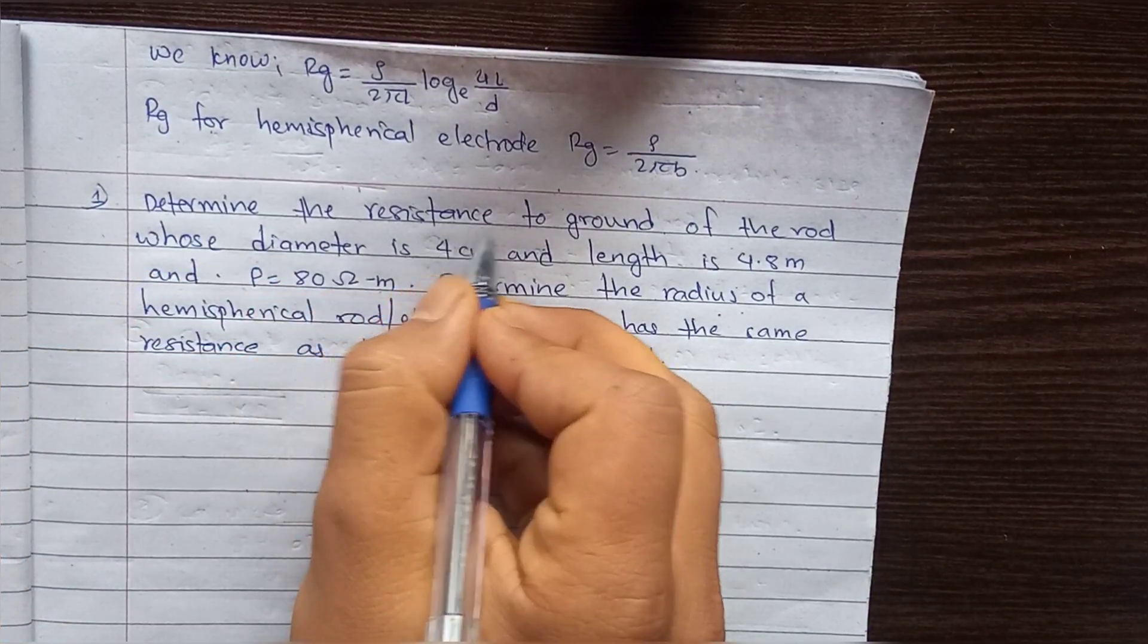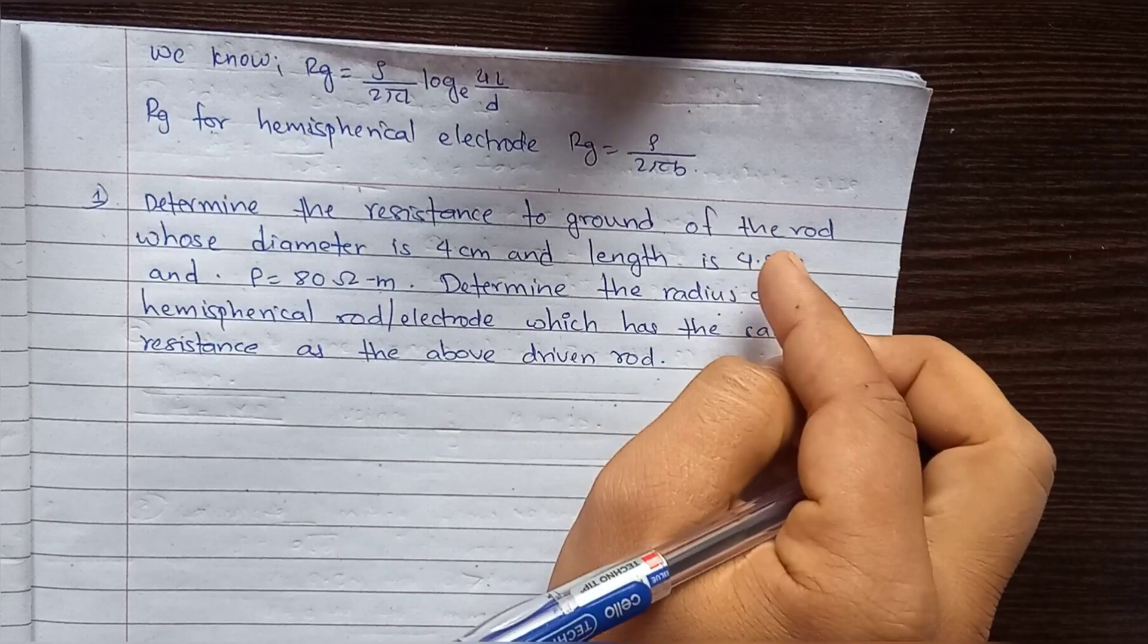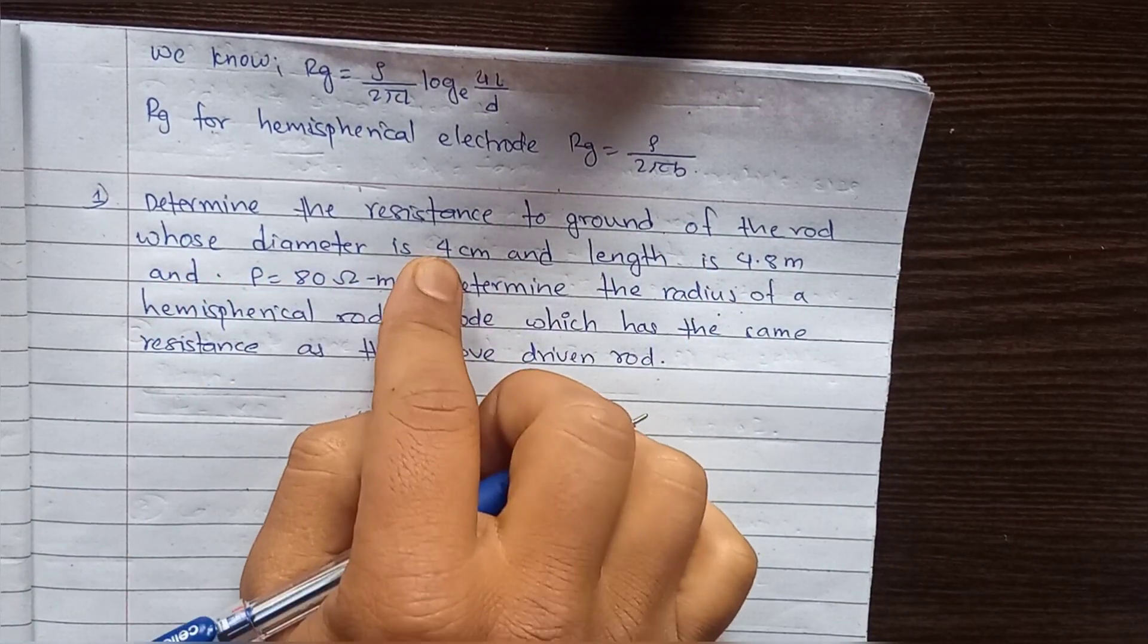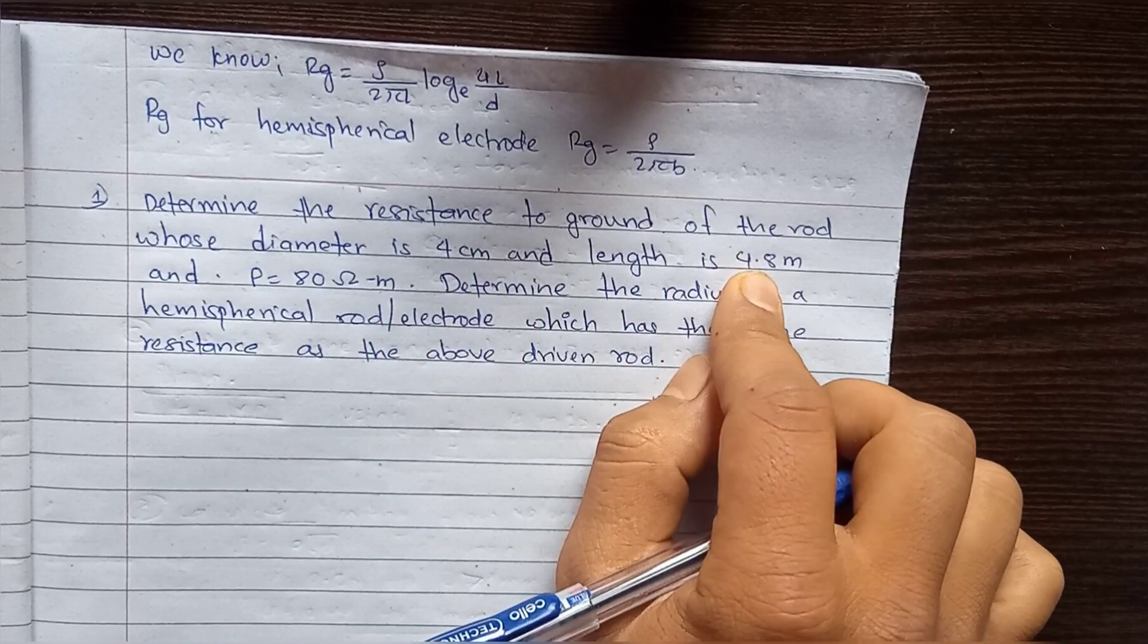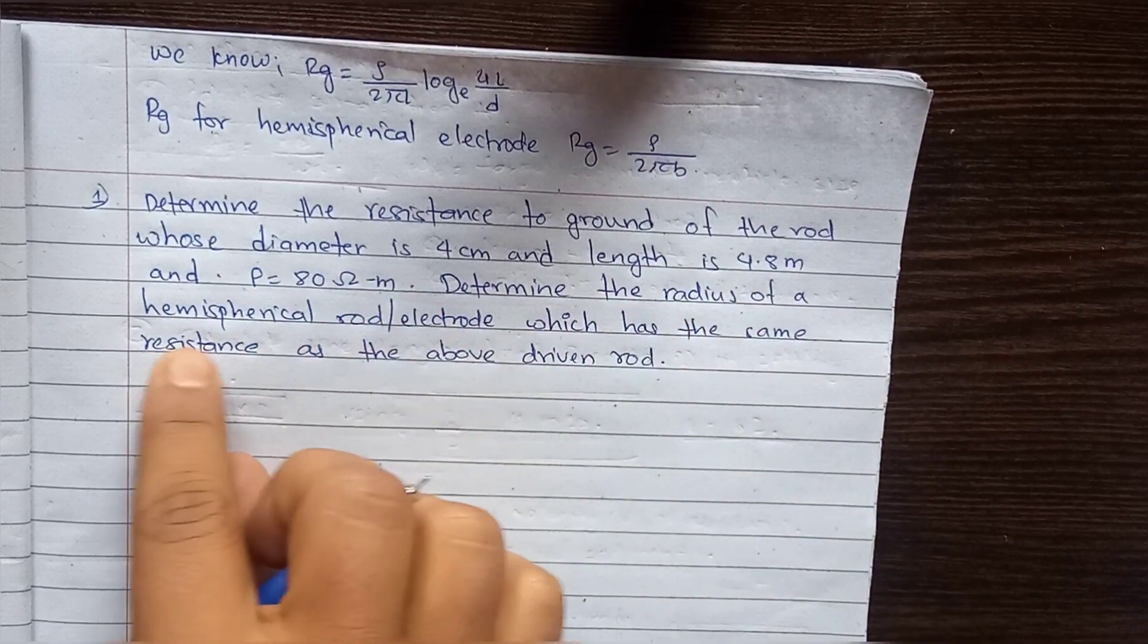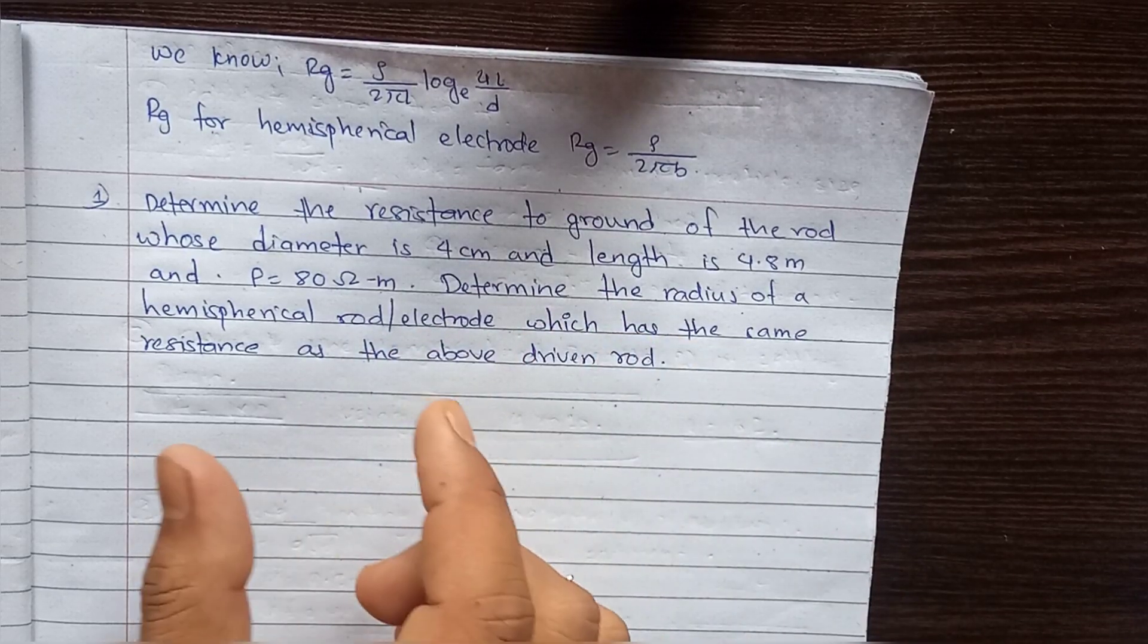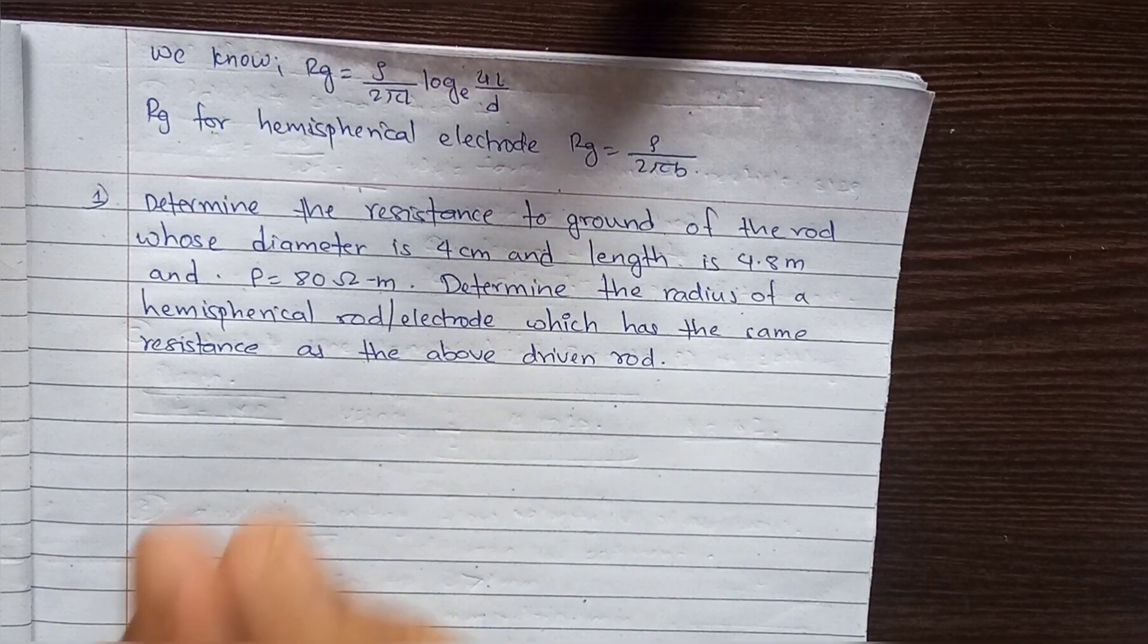Determine the resistance to ground of the rod whose diameter is 4cm and length is 4.8m. The soil resistivity is 80 ohm meter. Determine the radius of a hemispherical electrode which has the same resistance as the above driven rod.